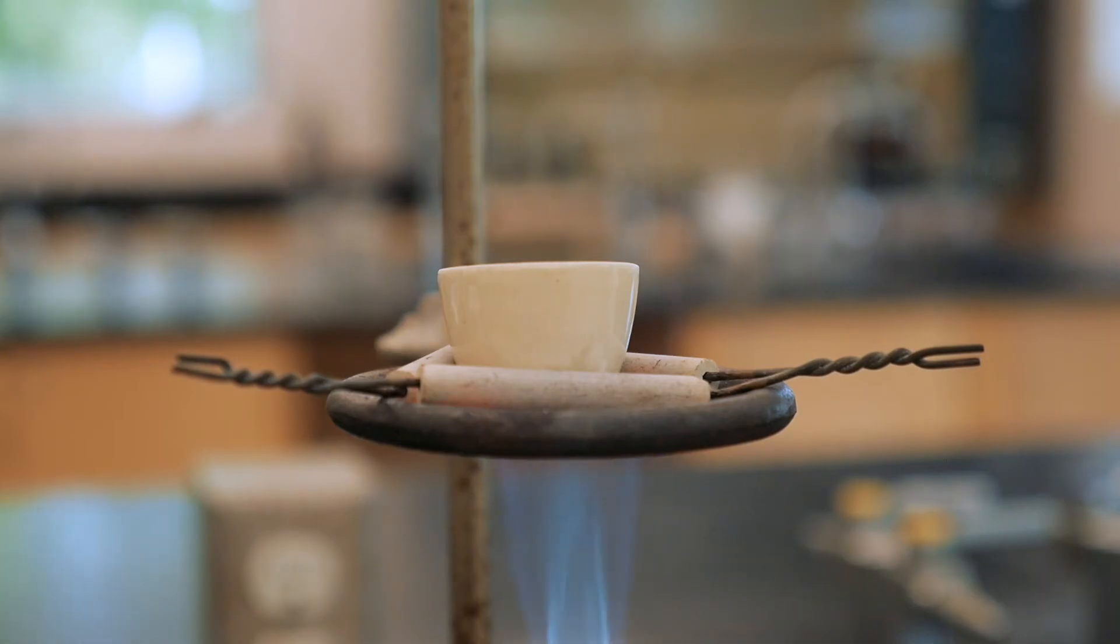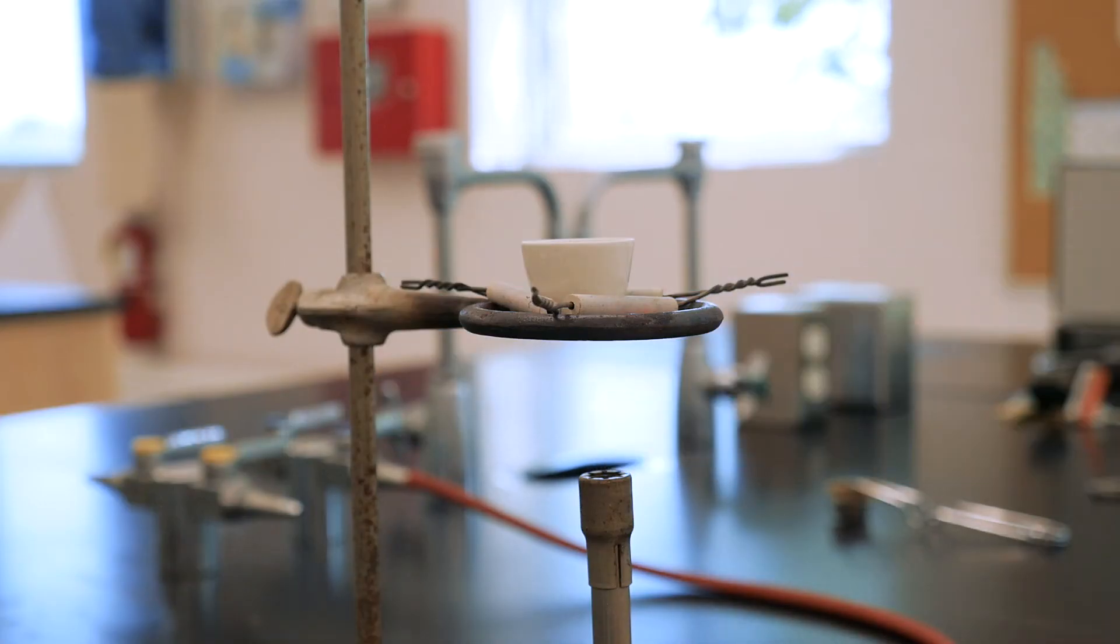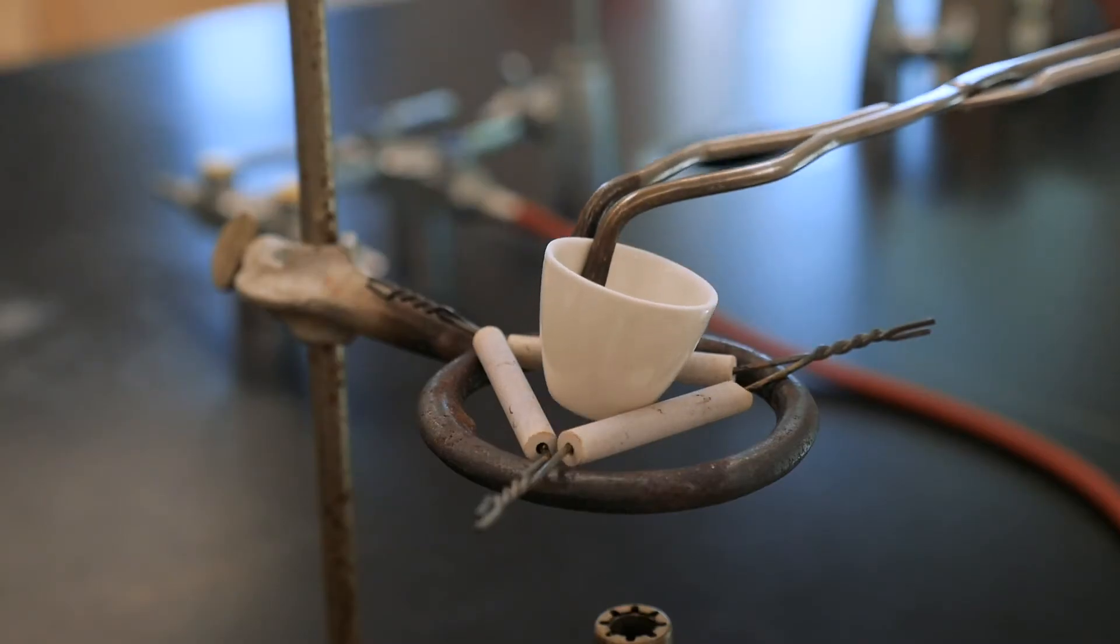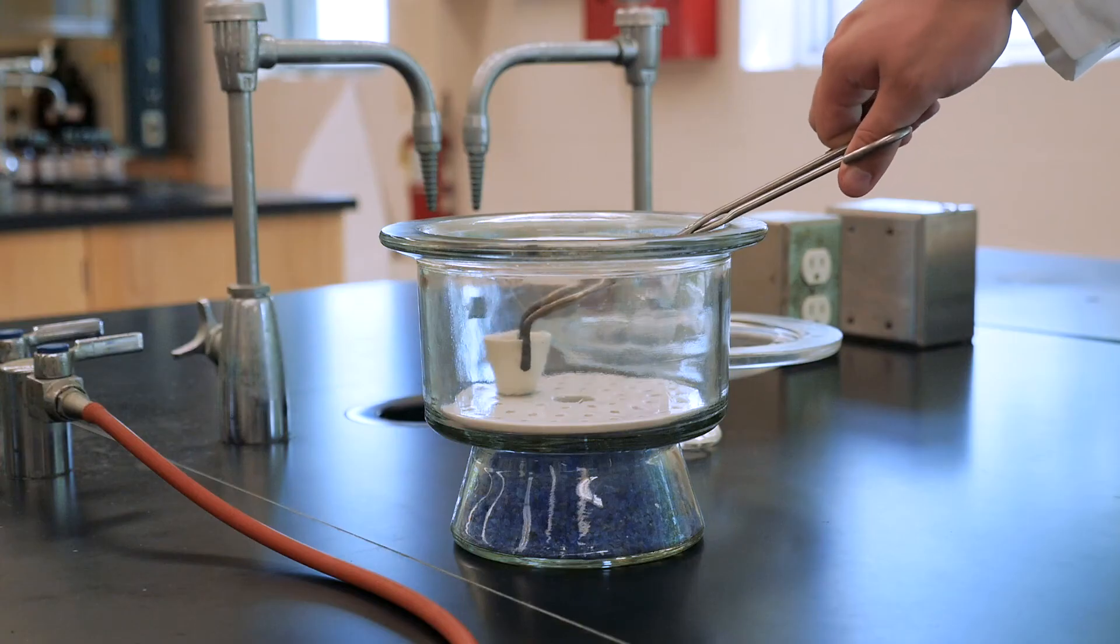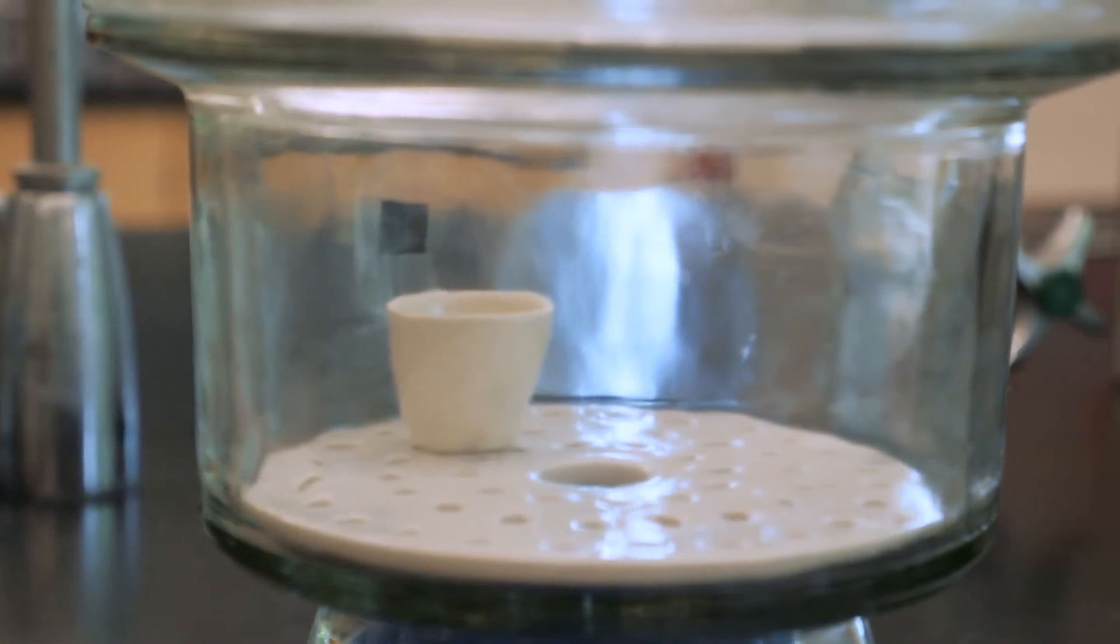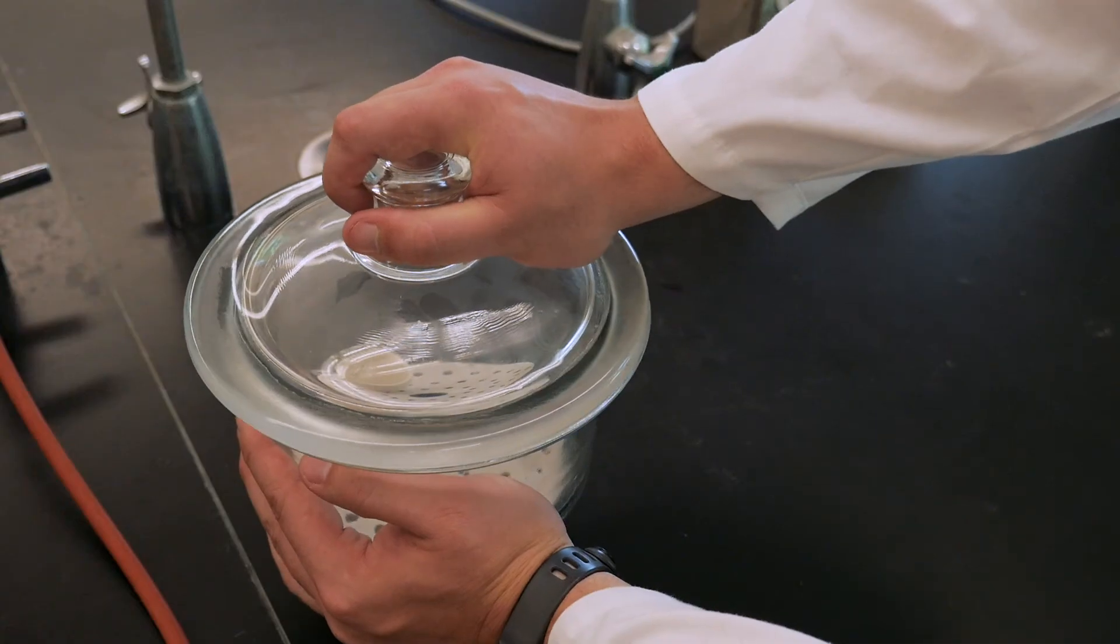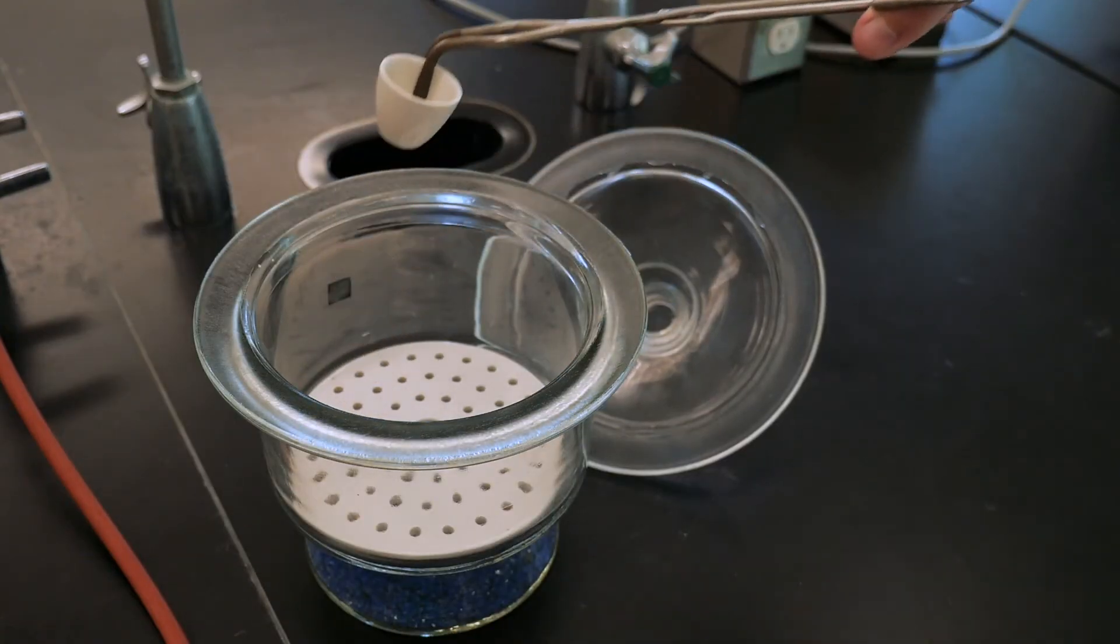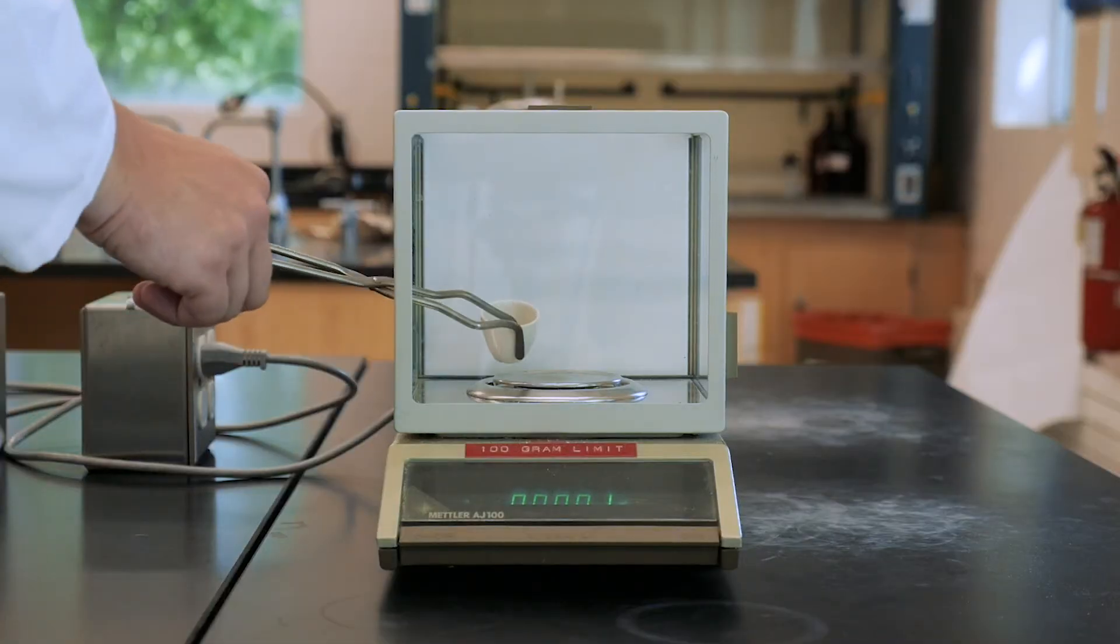Once you're done, allow the crucible to cool in air for 3 minutes, and then use the tongs to transfer your crucible to the desiccator. This desiccator provides an anhydrous environment for the crucible and other objects to cool without having to be exposed to any water molecules in the air. After your crucible is cooled for 10 minutes, determine the precise mass of the dried crucible using the analytical balance.